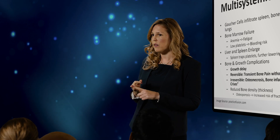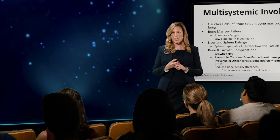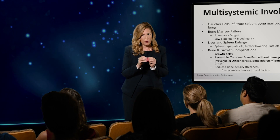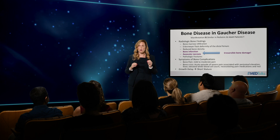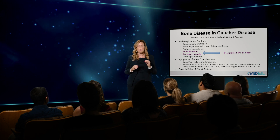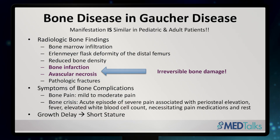We often see a reduction in platelets due to bone marrow infiltration. In addition to infiltrating the inside of the bone, Gaucher cells can actually infiltrate the bone itself and impact the thickness of the bone — called bone density — as well as the linear growth of the bone in length, leading to short stature and growth retardation. Separately, it can lead to bone lesions including bone infarcts, or strokes of the bone, and avascular necrosis, or death of the bone, which are irreversible bone complications.